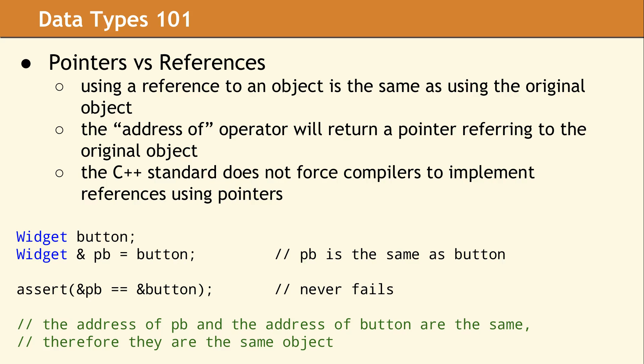So let's take a moment to contrast pointers and references. The fundamental defining characteristic of a reference is that a reference to an object is exactly the same as the original object. For example, when you take the address of a reference, you get the address of the original object. In this example, we have an object, a widget, called button, and we have a reference called pb. Once pb has been declared, it is completely indistinguishable from the original object, button. So this assert will never fail because pb and button are the same object. They occupy the same location in memory.